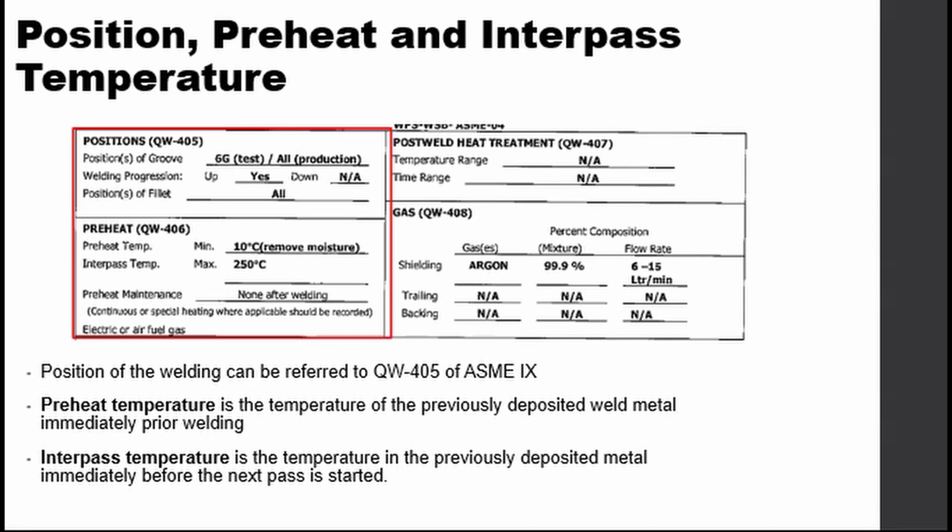Preheat temperature is the temperature of the base metal immediately prior to welding. As you can see in this sample WPS, the required preheat is only 10 degrees Celsius, which means the metal will not need to be preheated but moisture shall be removed prior to welding. This is essential especially for some electrodes where moisture can be detrimental to weld quality, causing porosity and other similar defects. Preheating is also essential for thicker or harder base metals to improve weldability.